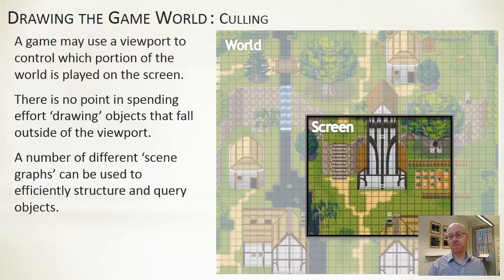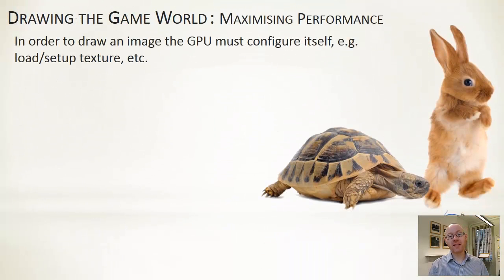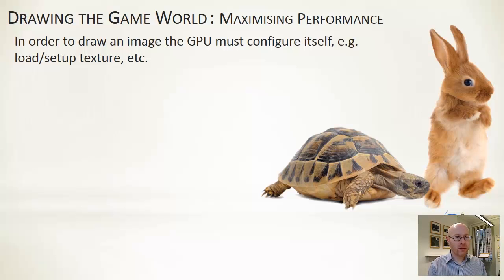Beyond tiles, there are lots of other approaches. A Scene Graph is simply a way of storing or organizing game objects, and there are lots of different ways you can structure them so you can efficiently parse through them. For maximizing performance, we're using a GPU — it's the thing that does the heavy lifting for drawing our textures. GPUs tend to be much faster than CPUs for drawing graphics because they're designed to exploit massive parallelism.